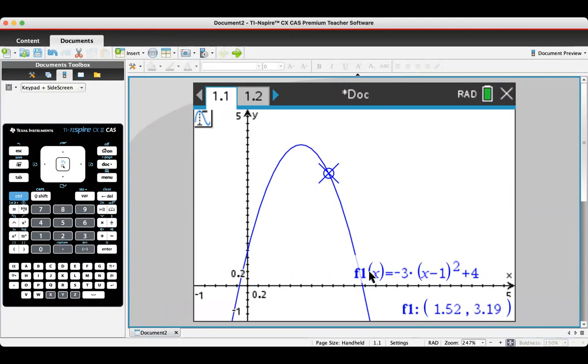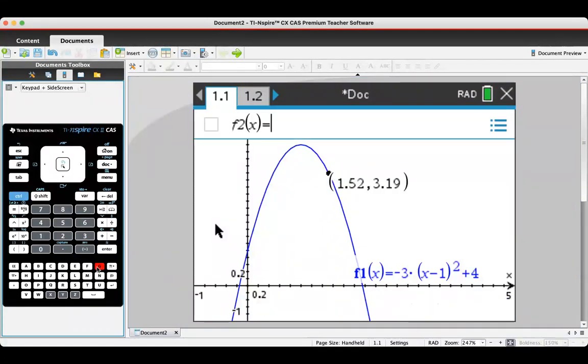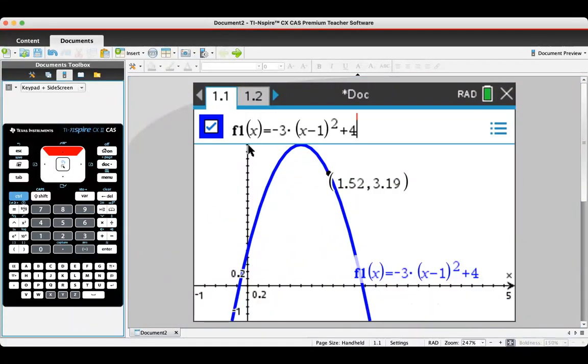And I can add a calculator, knowing that these two pages are linked. As you can see here, the graph that I've created is f1 of x equals negative 3 times x minus 1 squared plus 4, and if I go to control G, you'll see that in the list of functions.